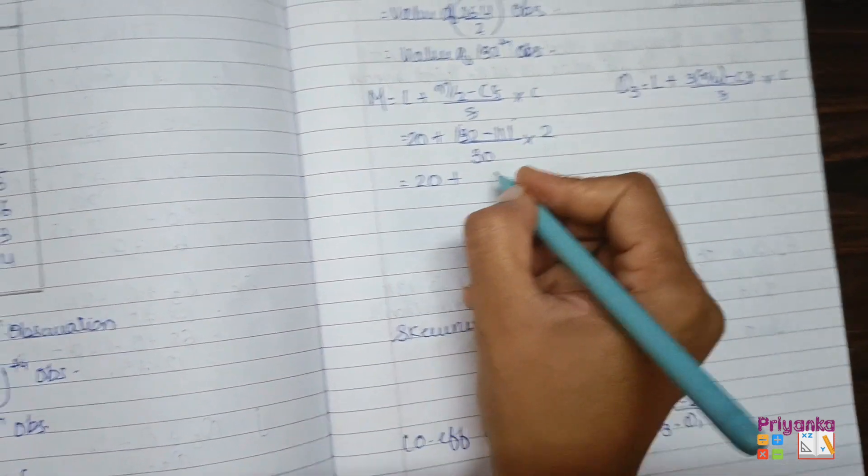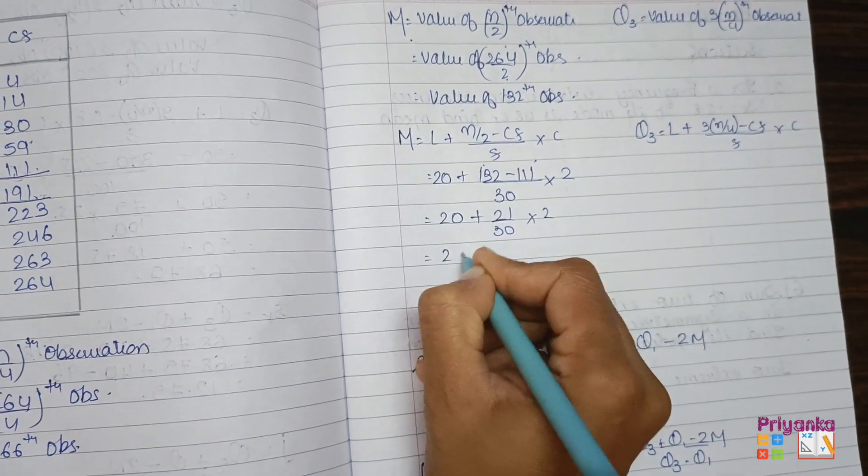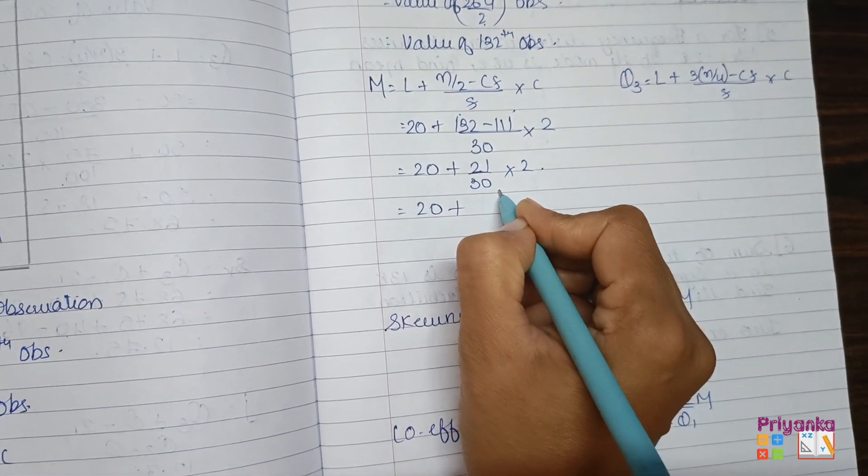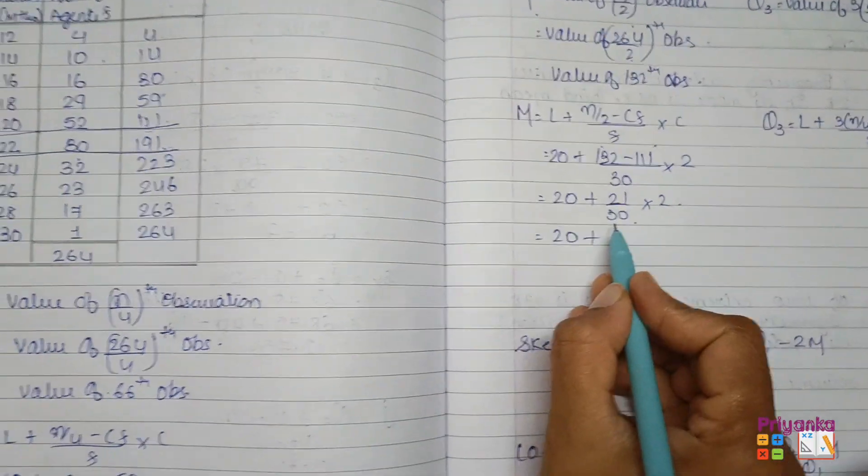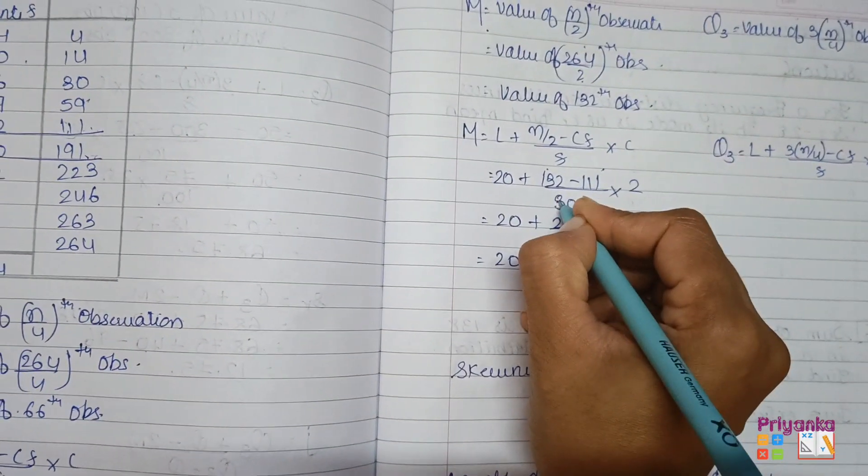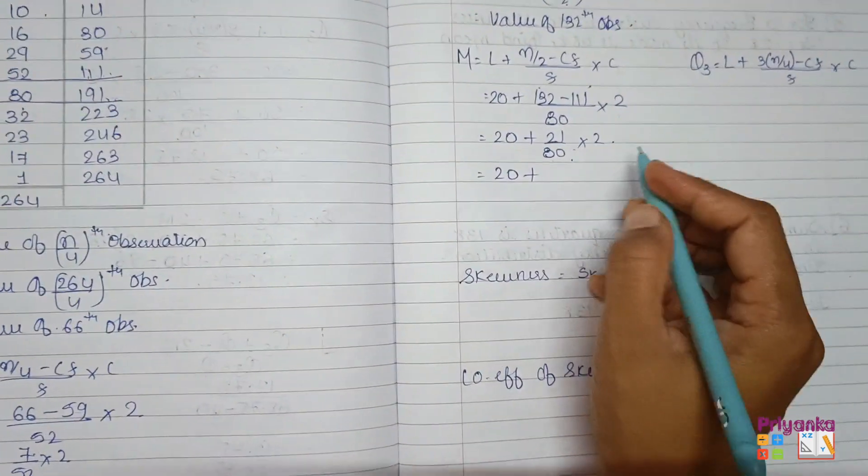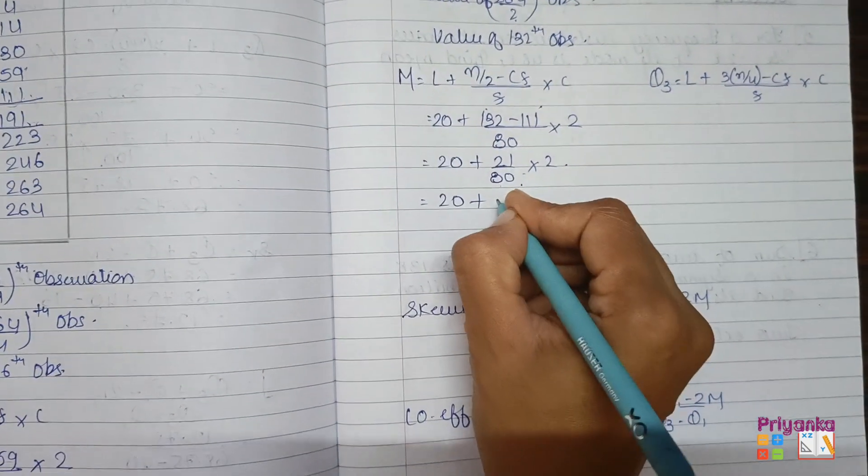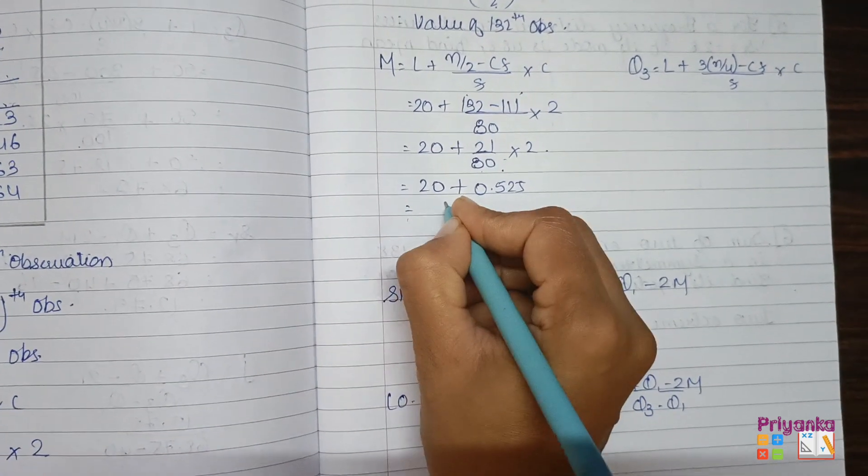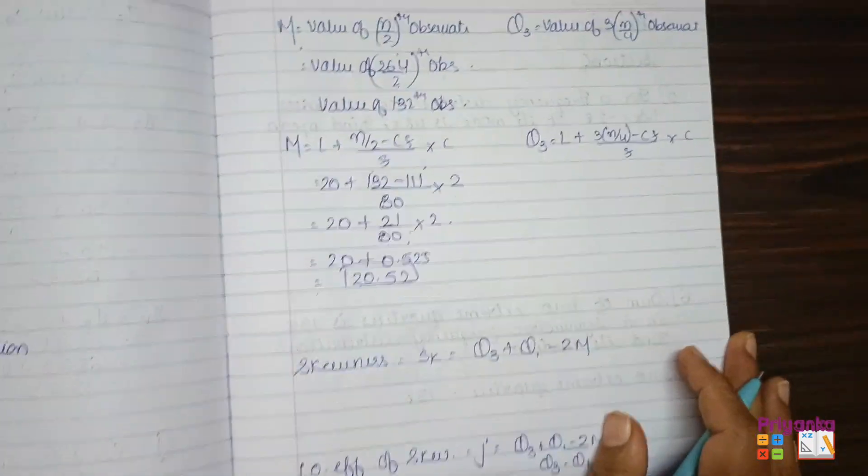So 20 plus 132 minus 111 will get 21 divided by 30 into 2. 20 plus 21 multiplied by 2 divided by 30. Sorry for so long, I'm taking 30 but it is 80. It looks like 30, so I am taking 30. It is 80, so please make a correction. So divide by 80, you will get 0.525. So the final answer of the median will be 20.52.